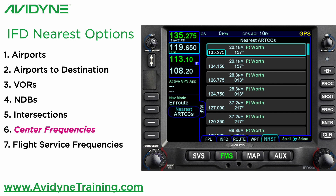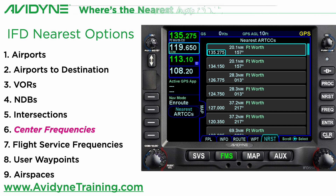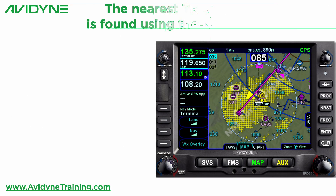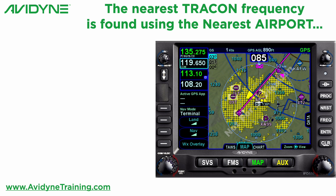It will show the flight service frequencies, the nearest user waypoints that you've created, and it will even show the nearest airspaces. But where is the nearest approach departure or TRACON frequency for those airspaces? Well, the easiest way to find it is actually using the nearest airport.